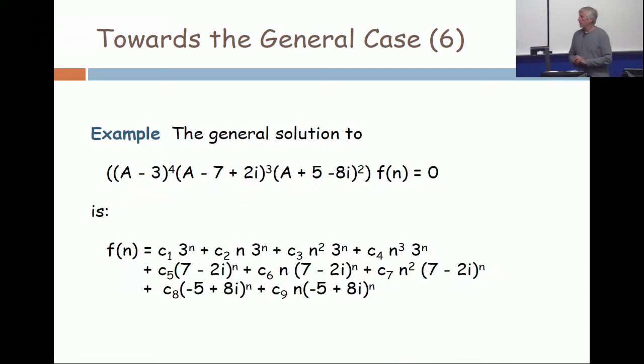Let's make this very concrete. Here is a polynomial operator equation given to you in factored form. I give you (A - 3)^4, (A - 7 + 2i)^3, and (A + 5 - 8i)^2, and it operates on f(n), and now I just claim there is the solution.